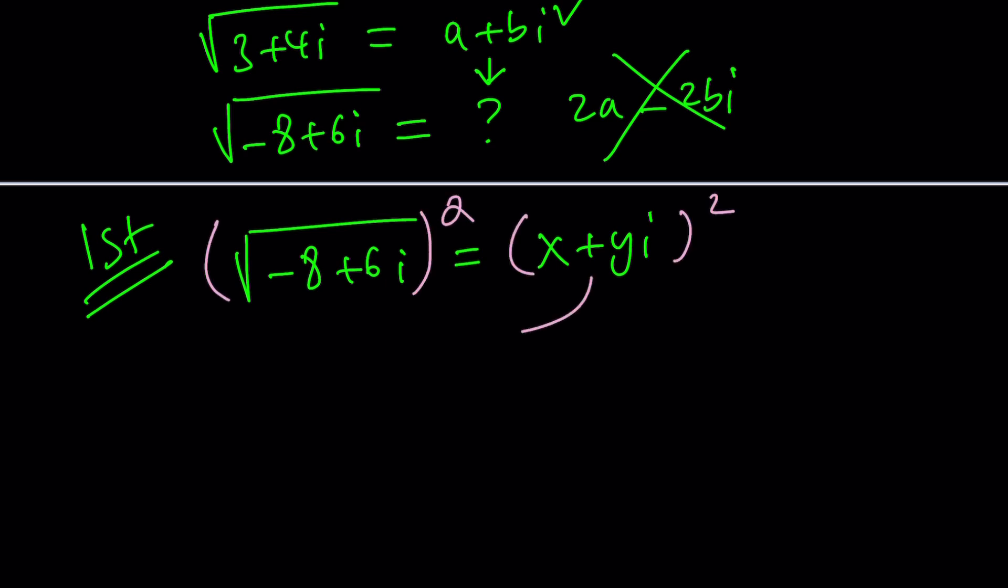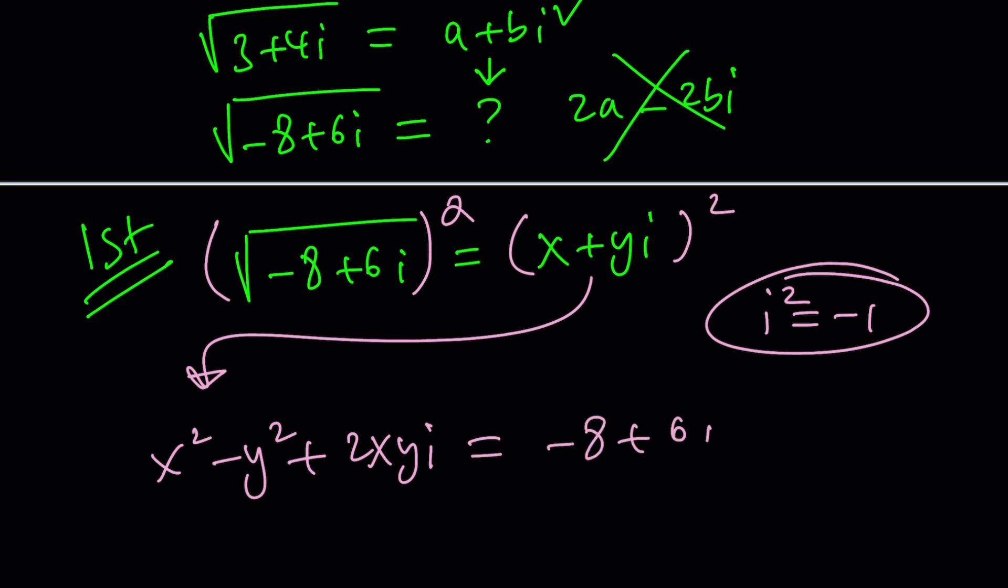Square both sides. And then put this on the left. x squared minus y squared, because i squared is negative one. Don't forget that. And plus 2xyi equals negative eight plus 6i.